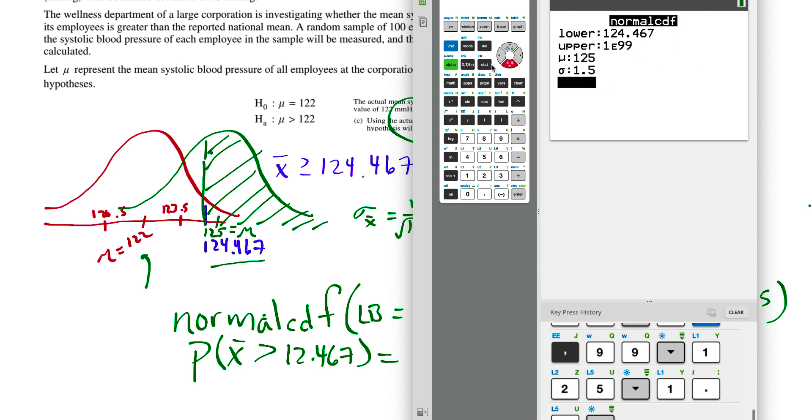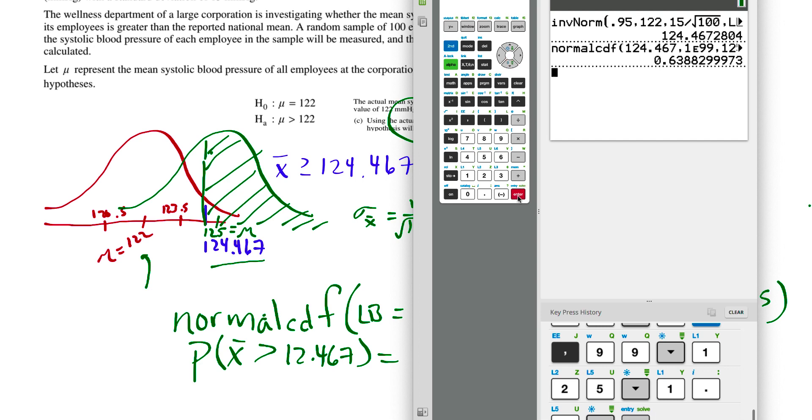Here is how I put it in the calculator. Go to second distribution. Go down to normal CDF. We have the lower bound, upper bound, mean, and standard deviation. We're going to hit enter on that and come up with about 64%.